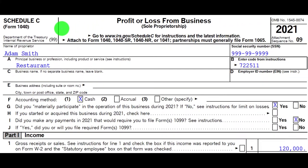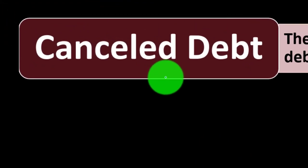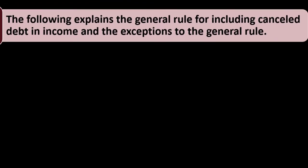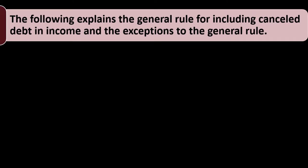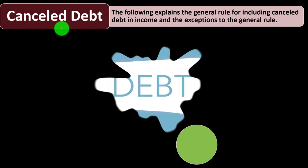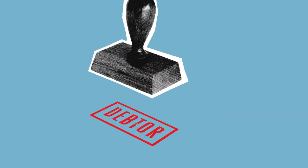We're still focusing on the income part of the income statement as opposed to the expense part. We're now looking at canceled debt. The following explains the general rule for including canceled debt in income and the exceptions to the general rule.